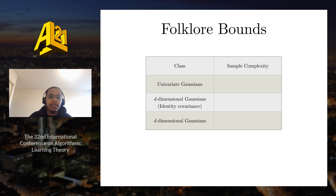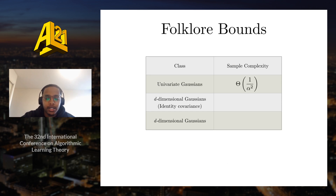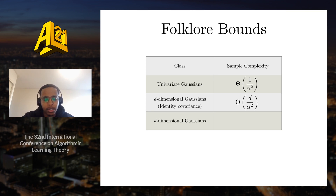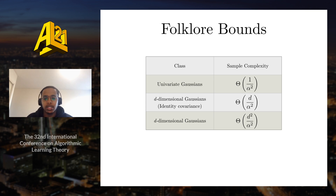Before jumping into the private bounds, here are some folklore bounds. For learning a univariate Gaussian in total variation distance up to α, the sample complexity grows as 1/α². For a d-dimensional Gaussian with known or identity covariance, the sample complexity grows linearly with d. And in the case where we have an arbitrary covariance matrix, the sample complexity grows quadratically with the dimension d.